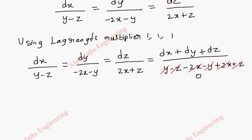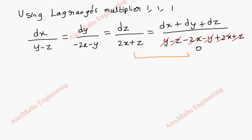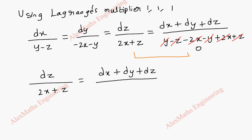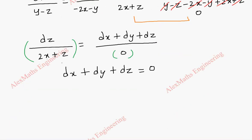Now we take two terms at a time. Taking dz/(2x+z) equal to (dx+dy+dz)/0, we cross-multiply: 0 times the entire term gives us dx+dy+dz = 0. Integrating both sides, this gives x + y + z = c1. So we got the first part of the solution.